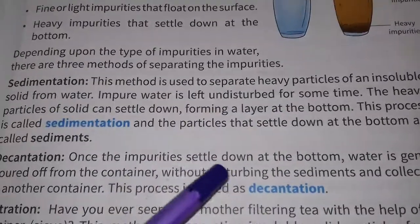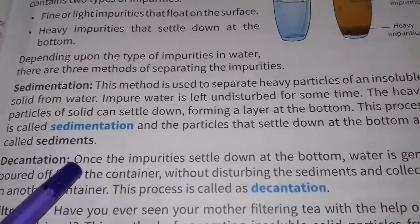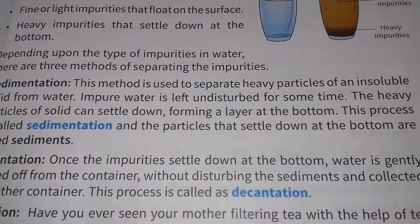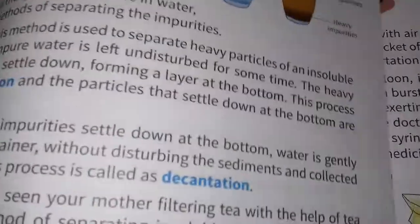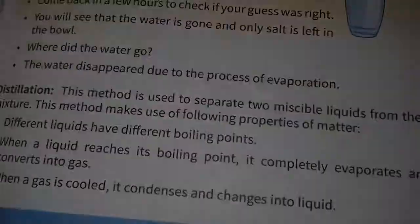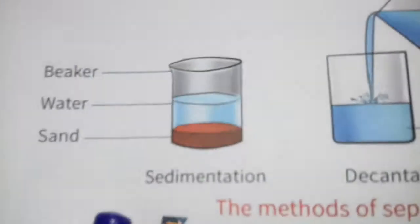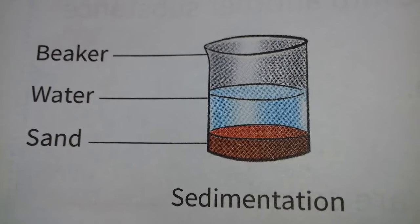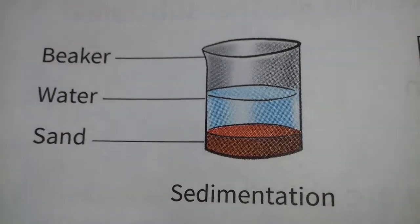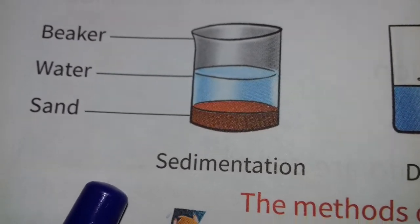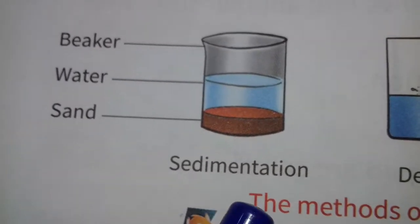Sedimentation is the method of separating two components in such a way that the heavier substances settle down. Here in a jar you can see: the water is there and sand is the heavy sediment, so the sediment settles down at the bottom.